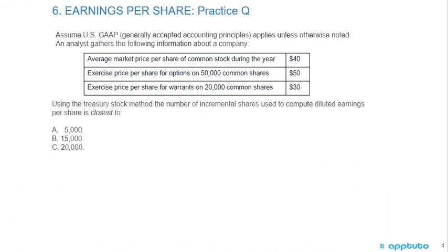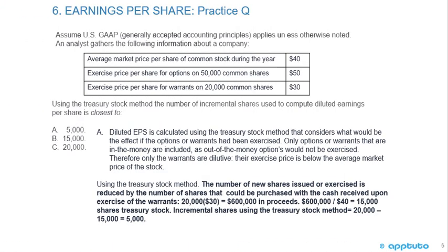Let's do a practice question. Assume US GAAP applies unless otherwise noted. An analyst gathers the following: the average market price per share is $40; exercise price for options on 50,000 common shares is $50; exercise price for warrants on 20,000 common shares is $30. Using the Treasury stock method, the number of incremental shares used to compute diluted EPS is closest to: A) 5,000, B) 15,000, or C) 20,000. The correct answer is A — 5,000 is the incremental number of shares.